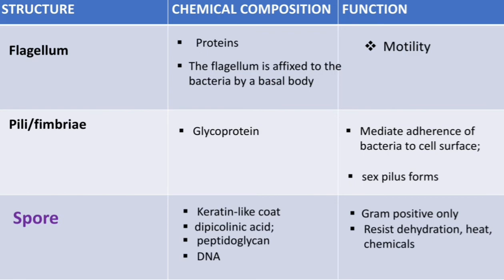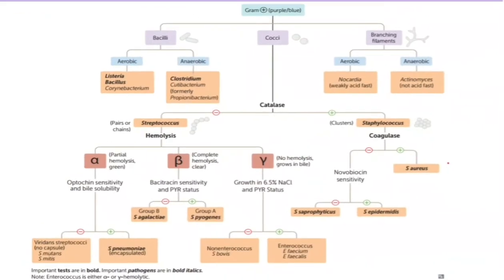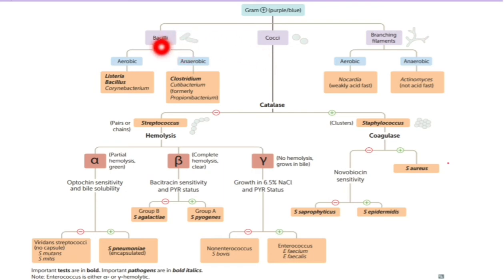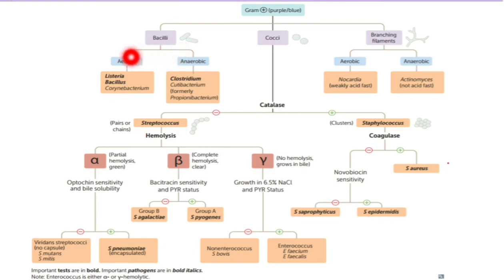Here is an overview of gram positive bacteria. Gram positive bacteria stain blue or purple. In terms of shape, gram positive bacteria can be grouped into three: bacilli, which are rod-like; cocci, which are spheres or circles; and branching filaments. Let's start with bacilli — bacilli can be grouped into aerobic and anaerobic.